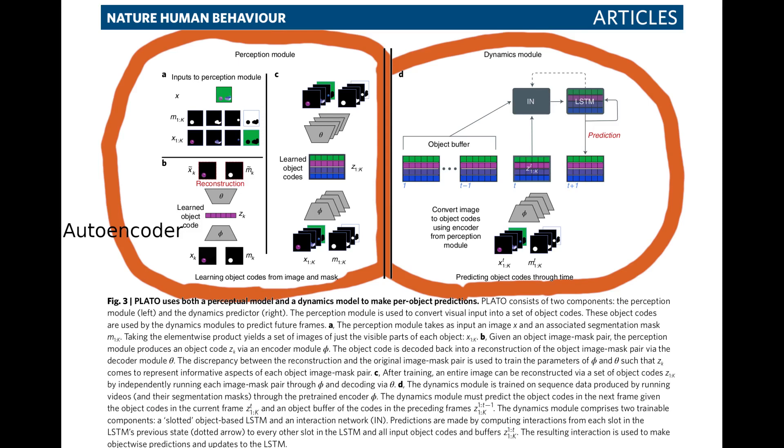So the perception module internally consists of an autoencoder. Now you might know or not know what an autoencoder is. Basically an autoencoder gets an input x and wants to predict the exact same output x. Now you might ask yourself what's the point of predicting the same exact thing.